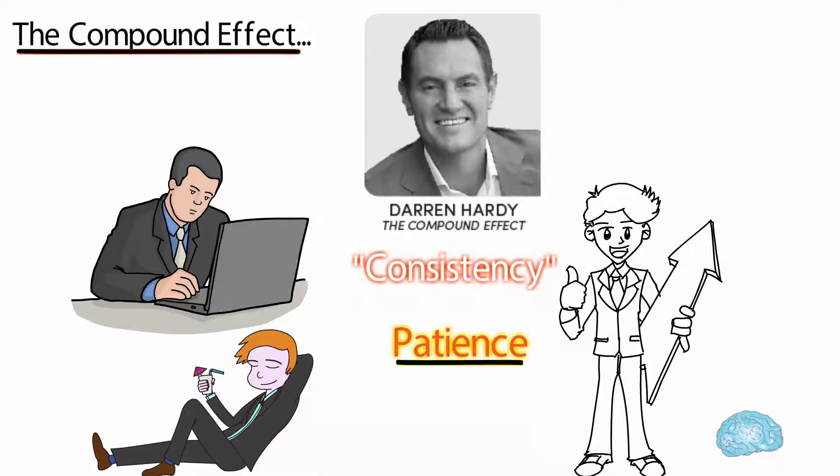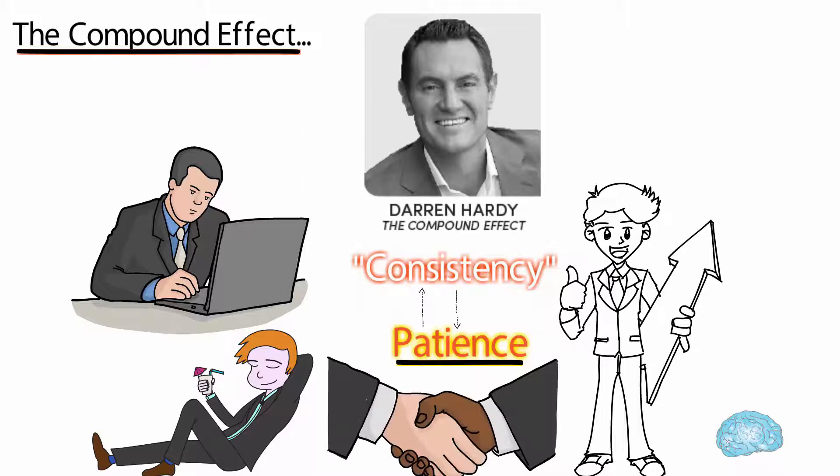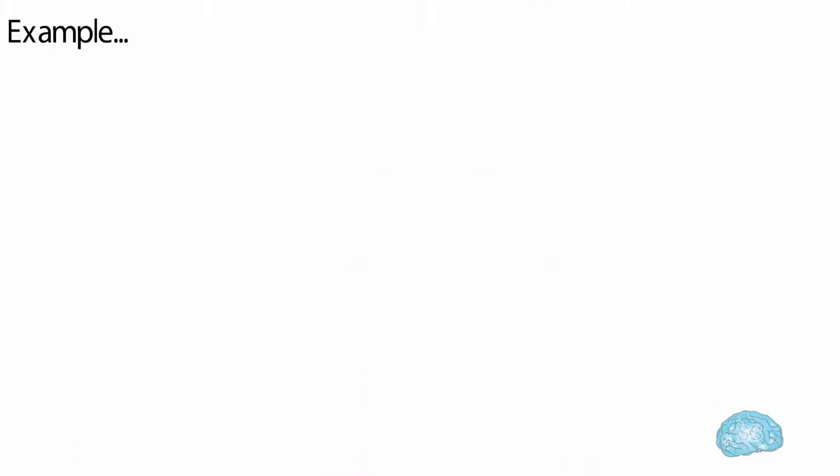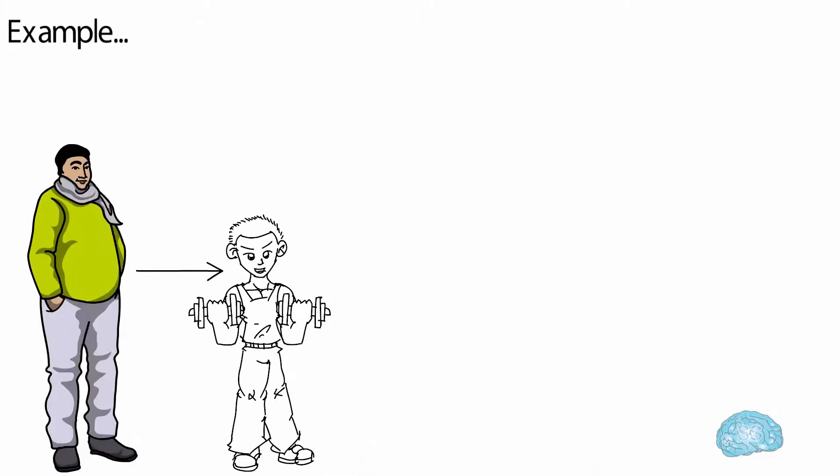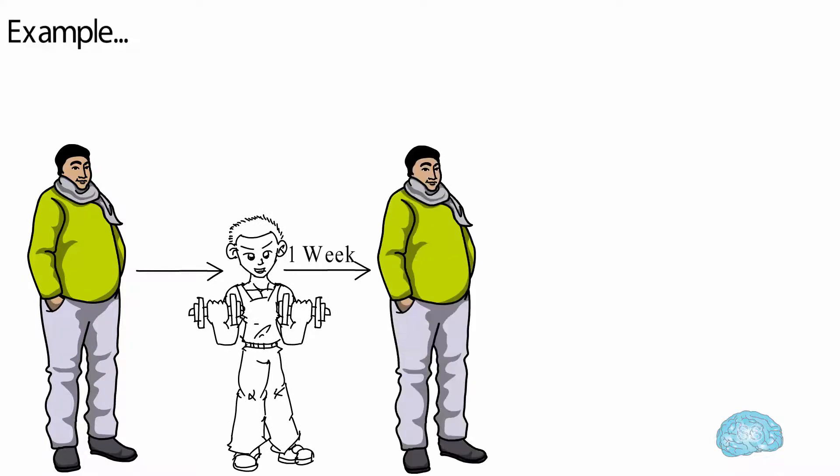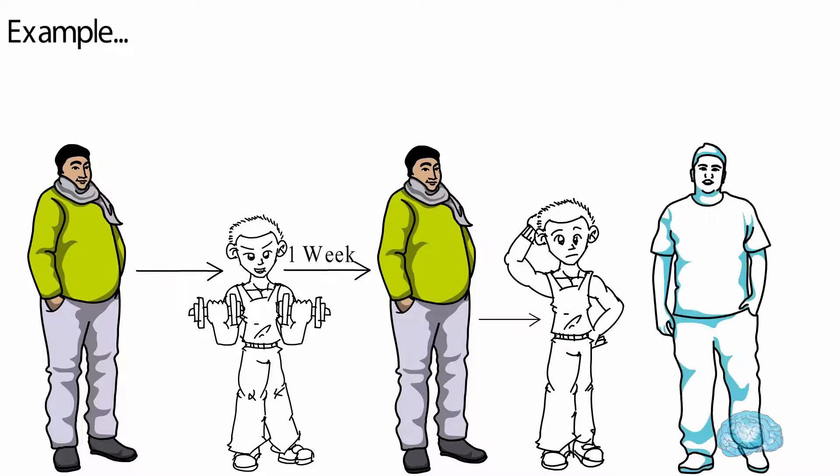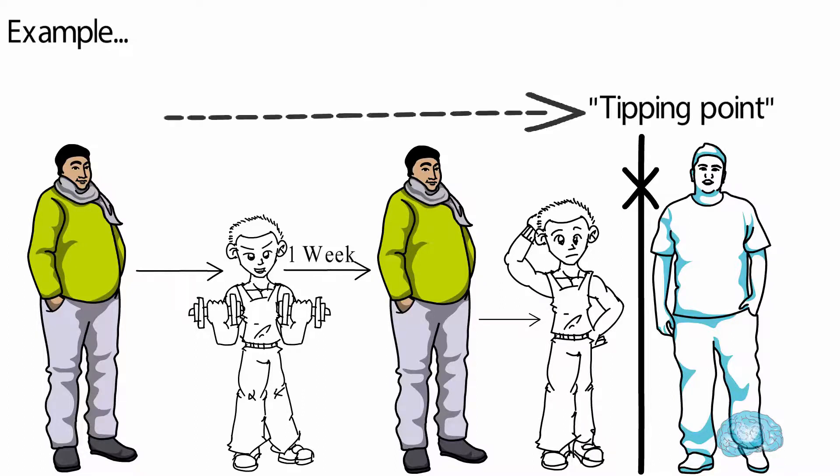Let's say you want to lose weight, so you start working out. But in a week or so, you don't see much change in your body. You slowly lose hope and stop the exercise. At this point, you broke the compound effect. You did not continue to reach the tipping point to benefit from the magic of compounding to see exponential results.